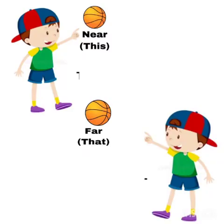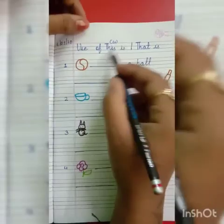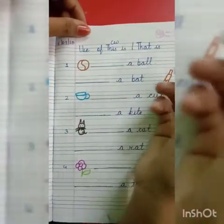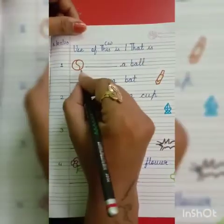So, for near object we use 'this' and for far object we use 'that.' Let's start our classwork. Let's work for 'this is' and 'that is.'